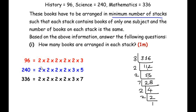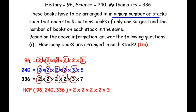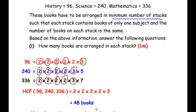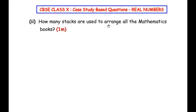Now that we have all the prime factors, let us find the HCF by identifying the common factors across all three numbers. The factor 2 appears four times in all three, and 3 is also common to all three. So the HCF of 96, 240, and 336 is 2 × 2 × 2 × 2 × 3 = 48. This means 48 books are arranged in each stack.